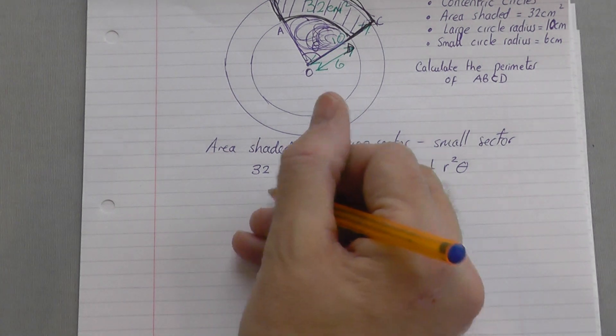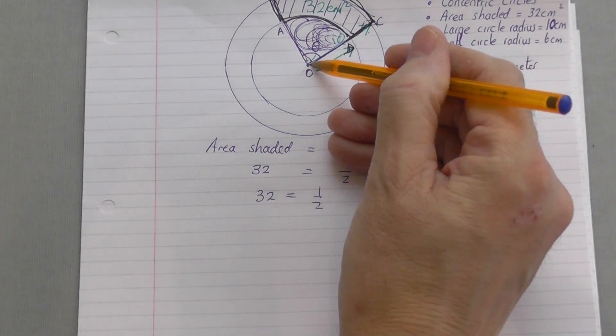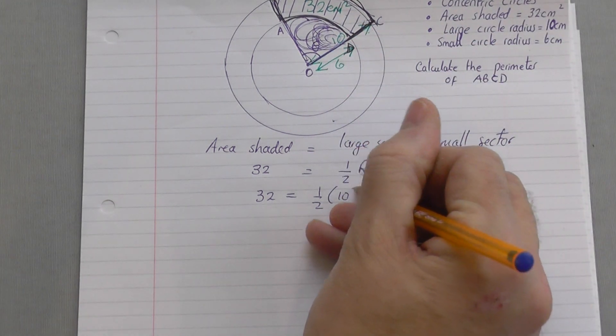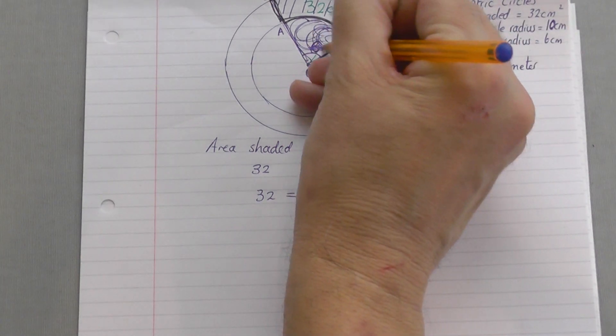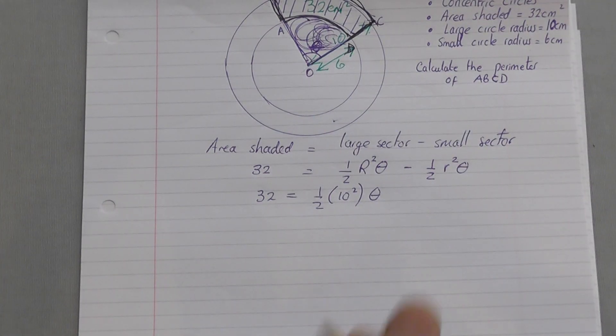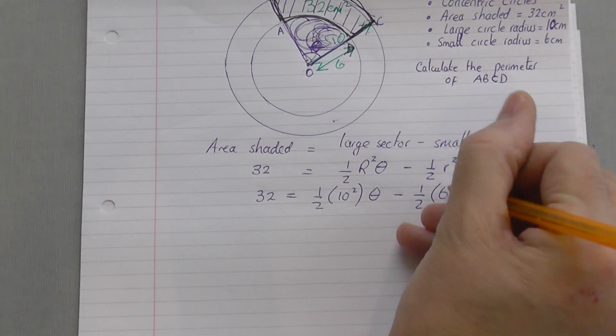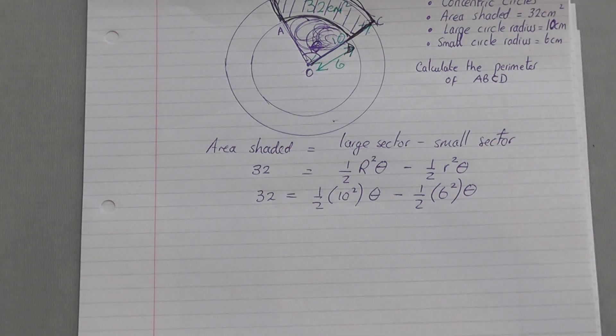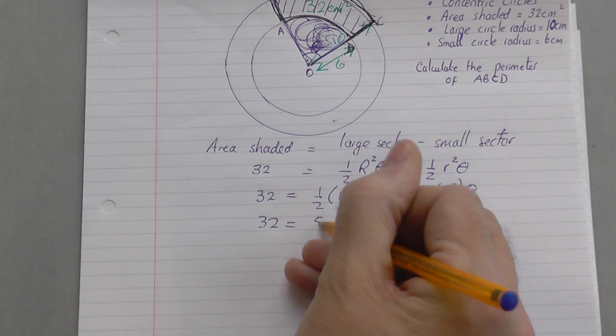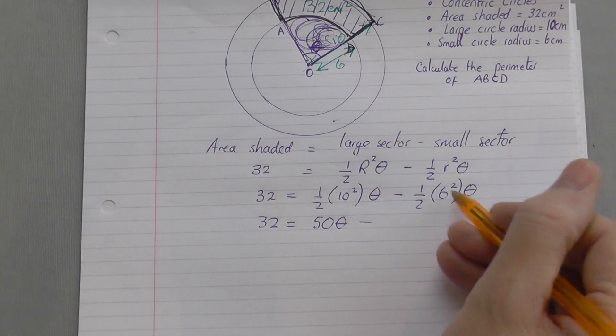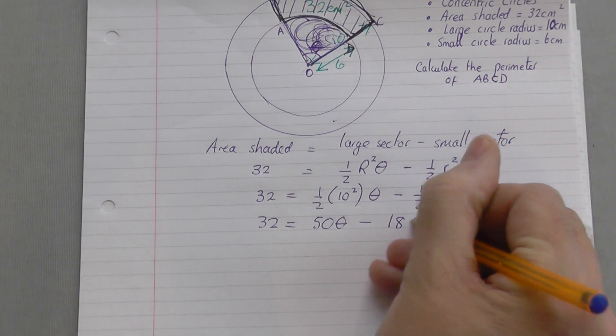Let's put numbers in. So you get 32 equals a half of, now big R, big radius was 10, so that's 10 squared times theta. I don't know what theta is, leave it alone for now. Take away a half, small radius is 6, so that's 6 squared times theta. So we get 32 equals 10 squared is 100, half of 100 is 50 theta. Take away 6 squared is 36, half of 36 is 18 theta.